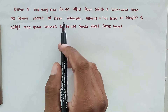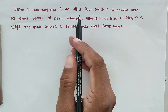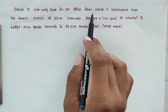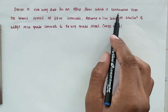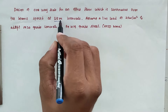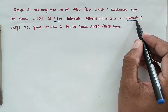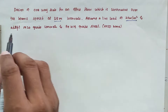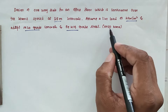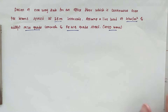Hello friends, welcome to Civil Engineering Exam. Today we are going to see a problem related to the limit state design of slabs. The problem is: design a one-way slab for an office floor which is continuous over T-beams spaced at 3.5 meter intervals. Assume the live load is 4 kN per meter square and adopt M20 grade concrete and Fe 415 grade steel, that is high yield strength deformed bars.